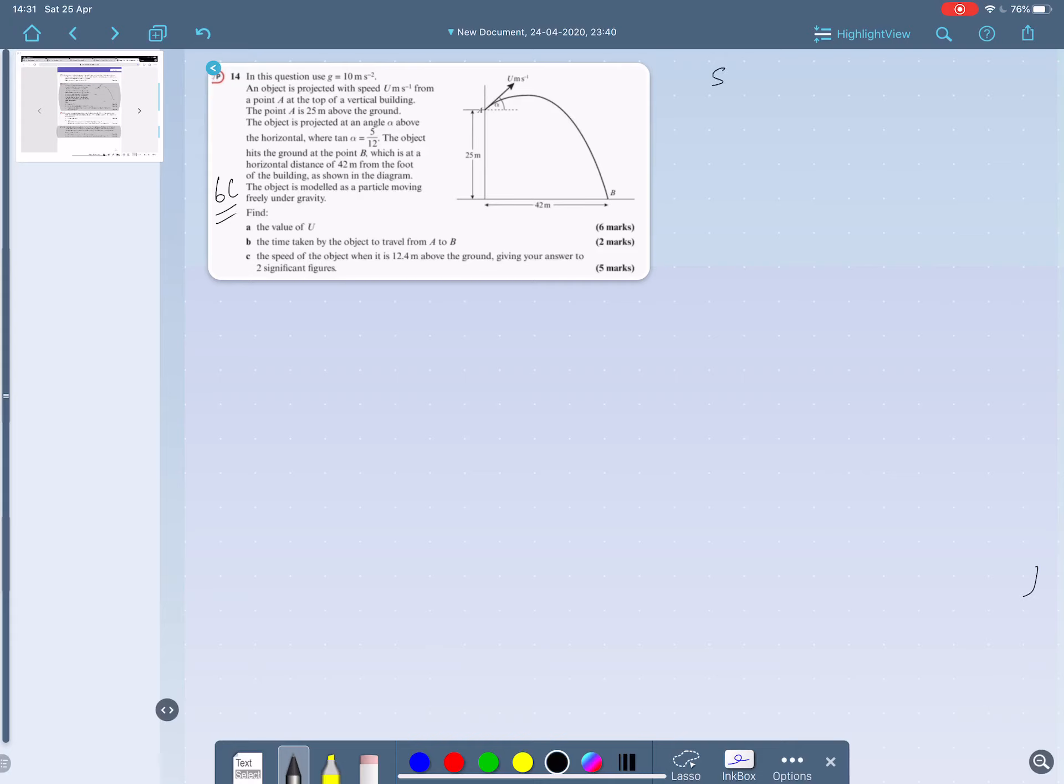Clearly, we're going to make use of this equation: s equals ut plus half a t squared. So whatever they ask you in parts A, B, and C, these equations will play its role. Now, what else we're given? It's tan alpha is 5 over 12, so it's worth drawing a triangle. That's alpha, hypotenuse 13, so sine alpha is 5 over 13, and cos alpha is 12 over 13. Because we're going to use sine and cos alpha in our calculations. G is given as 10 meters per second squared. That's worth writing down as well.